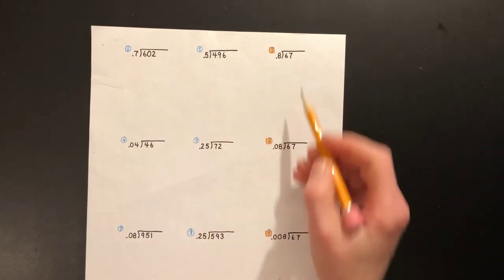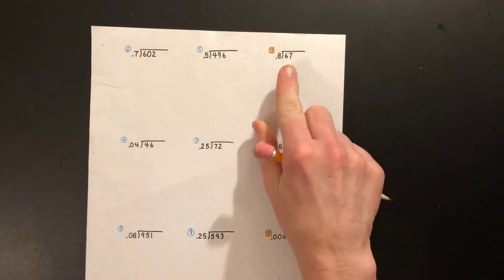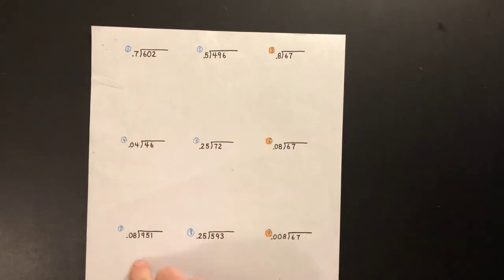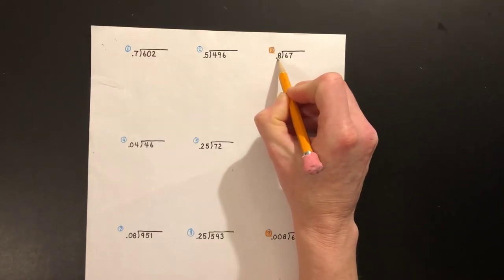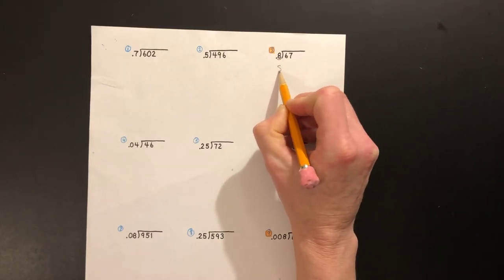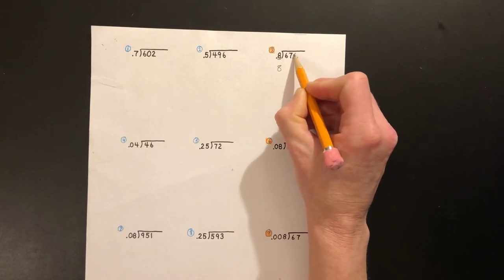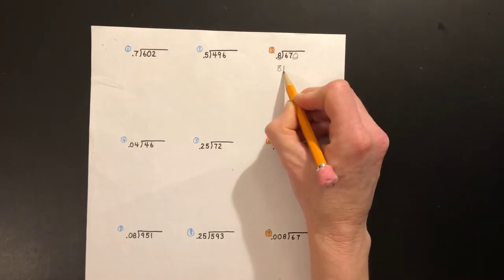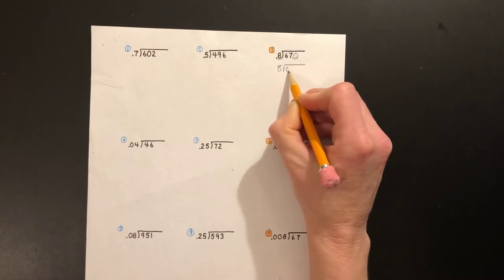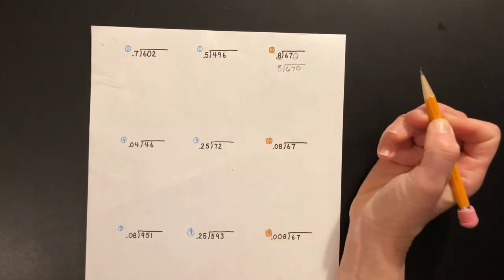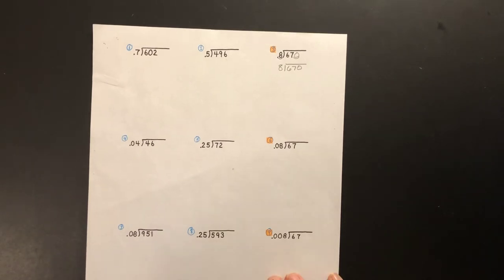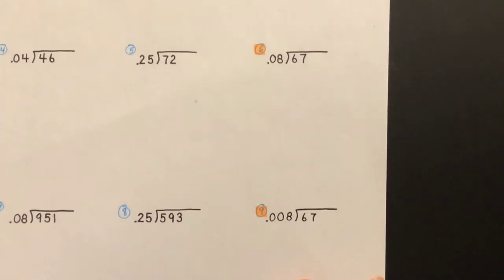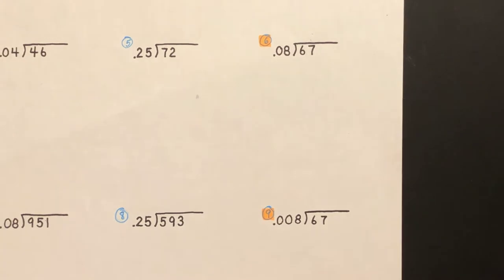So all you'll need to do when you need to move the decimal one place to make this a whole number is essentially just add one zero, so then you have 670. On number two, you've got to move the decimal two places.